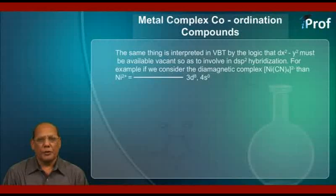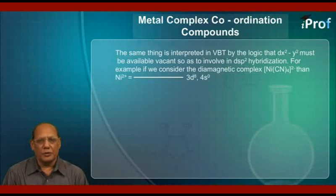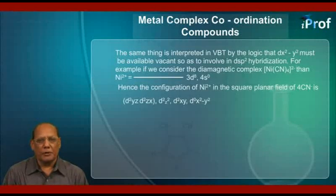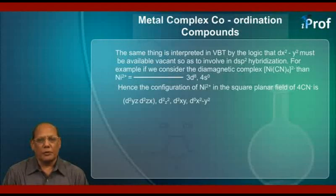The same thing is interpreted by the logic that dx²-y² must be available and vacant so as to be involved in dsp² hybridization. For example, if you consider the diamagnetic complex [Ni(CN)4]²⁻, the nickel(II) ion has the configuration 3d⁸4s⁰. Hence, the configuration of the nickel ion in the square planar field of four cyanide ligands is: dyz², dzx², dz²², dxy², and dx²-y² remains vacant.